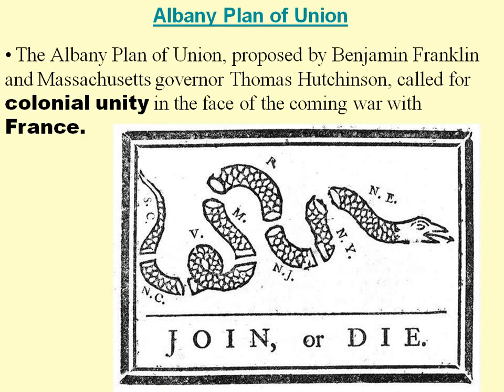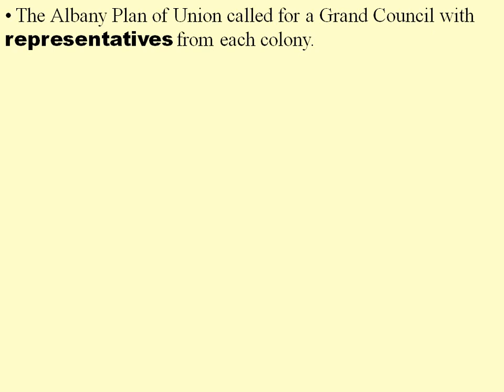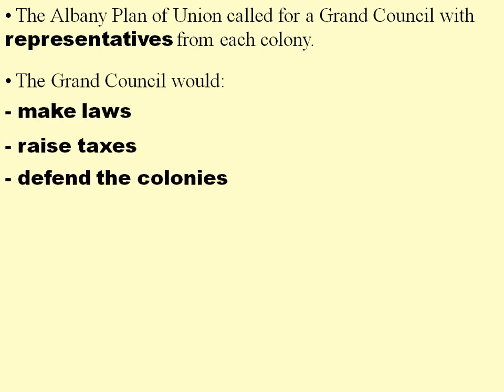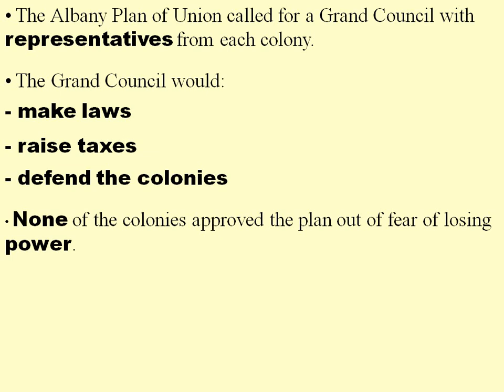The Albany Plan of Union was proposed by a young Benjamin Franklin. Massachusetts Governor Thomas Hutchinson called for colonial unity in order to face the coming war with France. You see the snake here — he is severed — and it says 'Join or Die.' This is a political cartoon sketch from Ben Franklin. The Albany Plan called for a Grand Council with representatives from each colony that would make laws, raise taxes, and defend the colonies. However, none of the colonies approved the plan out of fear of losing power. Franklin was talking about uniting the colonies, but that was easier said than done.